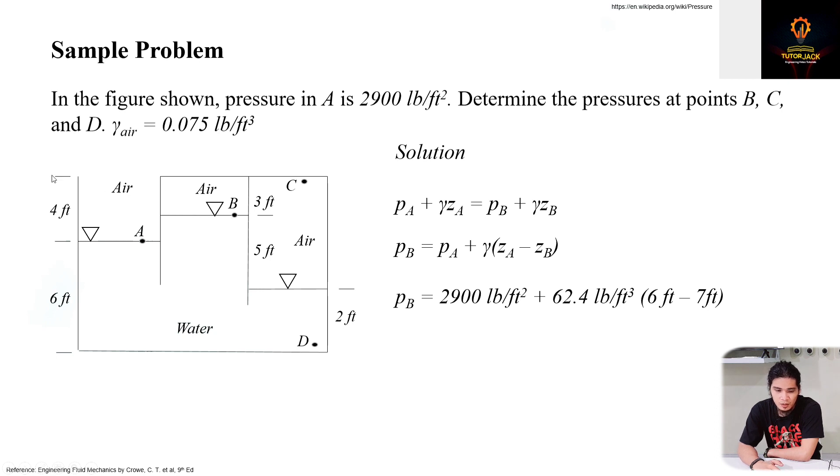Elevation at B is 7, because you have a total elevation of 10 minus 3, that's 7. So let's evaluate. We will have pressure at B equals 2,837.6 pounds per square foot.